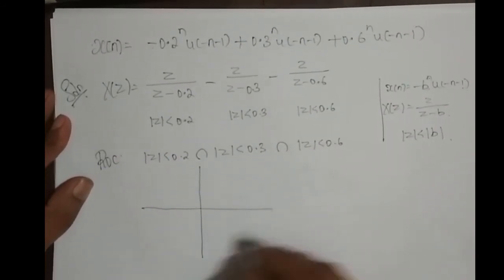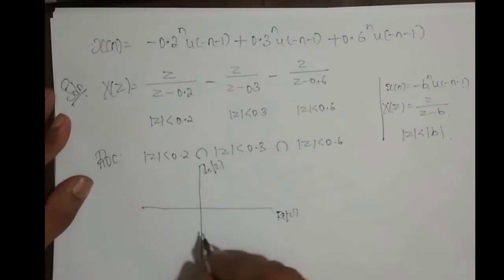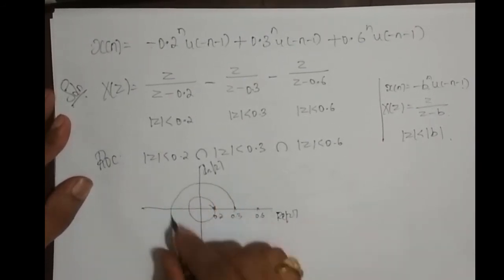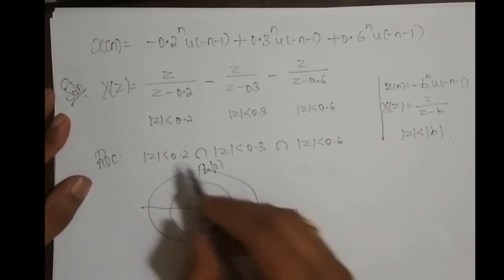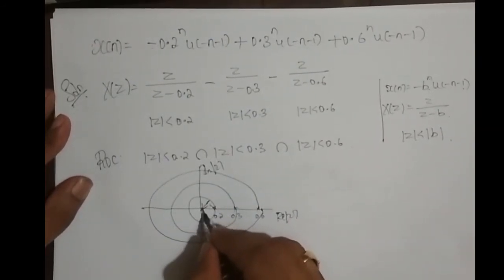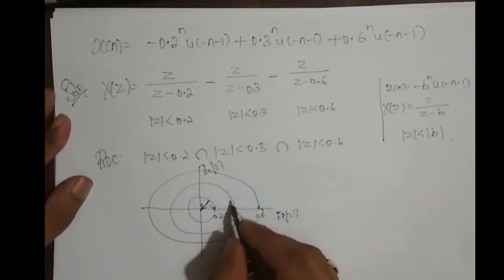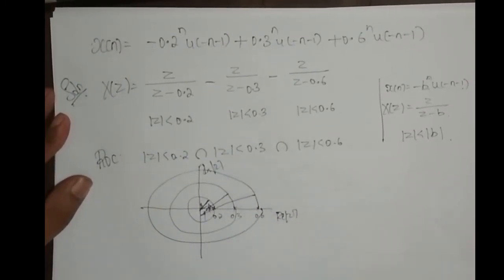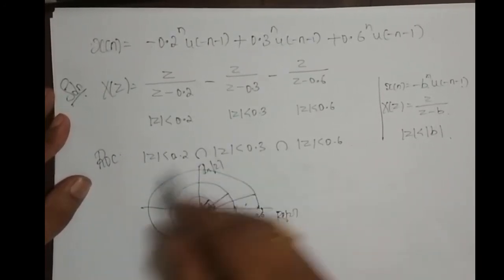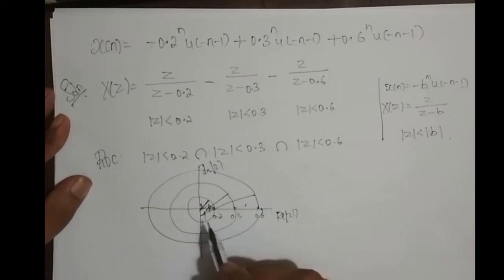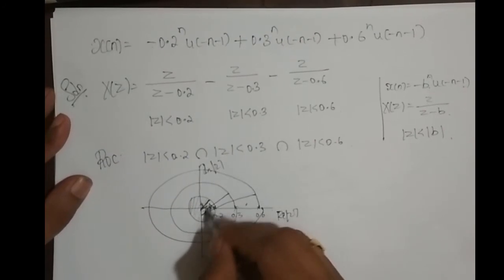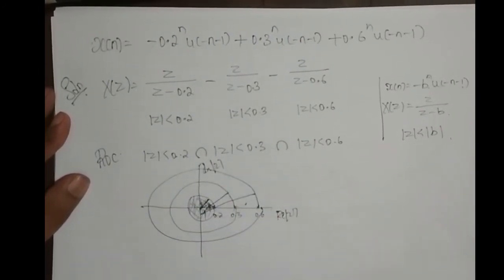What is the combined ROC in the z-plane? We have three circles with radii 0.2, 0.3, and 0.6. For the 0.2-radius circle ROC is inside (|z| < 0.2), for 0.3-radius it is inside, and for 0.6-radius it is also inside. Outside the outermost circle there is no coverage. The innermost region — inside the 0.2-radius circle — satisfies all three ROC conditions simultaneously. Therefore the combined ROC is the region inside all three circles.